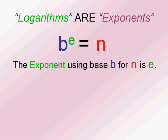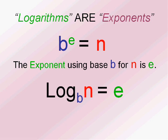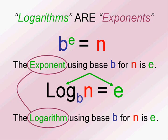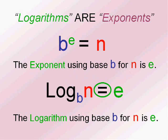Let's see, the exponent using base b for the number n is e. Well, we can also write it this way: the logarithm using base b for the number n is e, is the exponent e. Because exponents are logarithms, they're the same thing. Exponents are logarithms, you've got to get that down. So the logarithm equals the exponent.